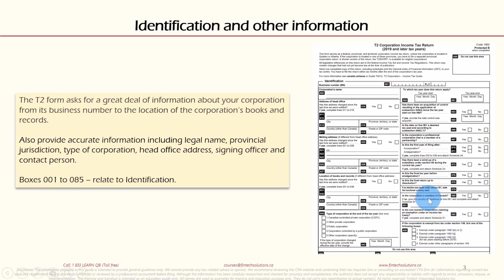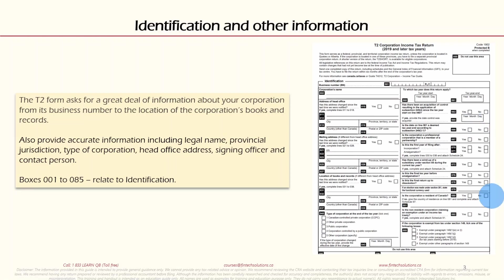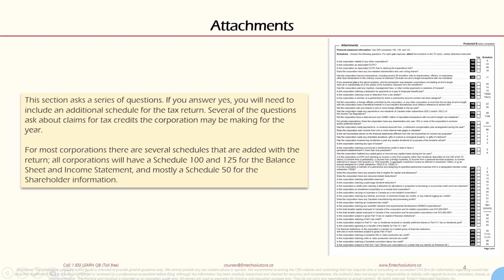Here on the T2 Corporation Income Tax Return form, this is the identification area. A lot of information needs to be provided through these boxes — they are more like checkboxes. Once you provide that information, you move on to Section 2, which is about Attachments.